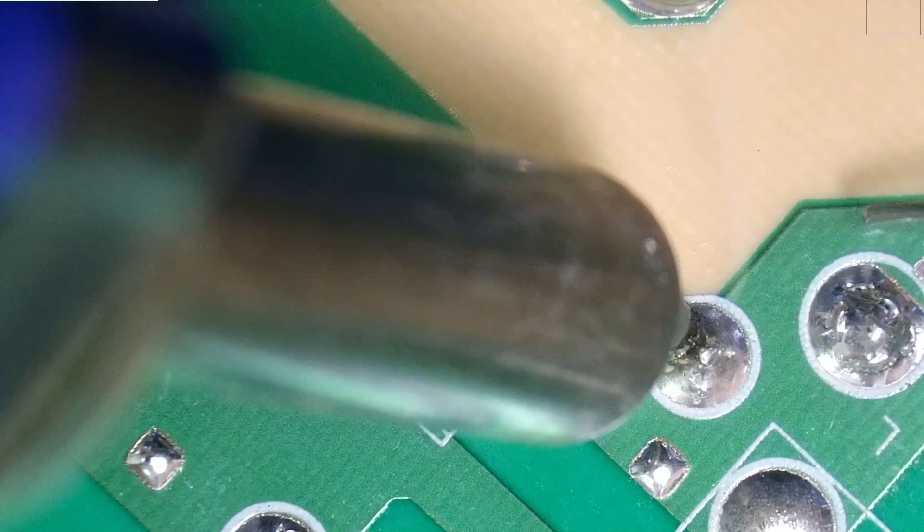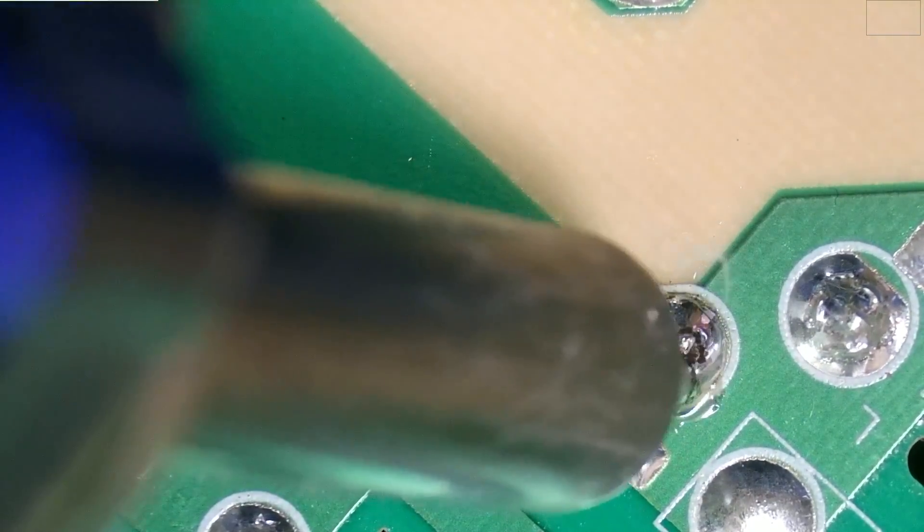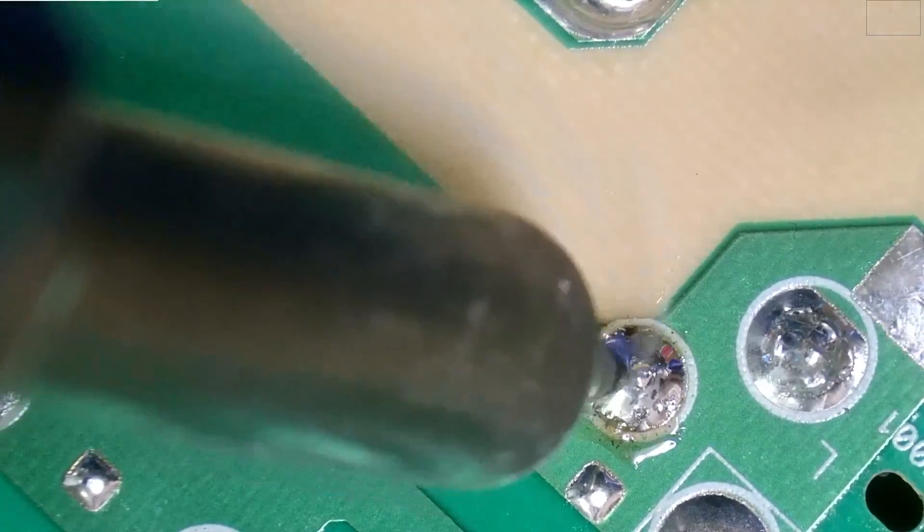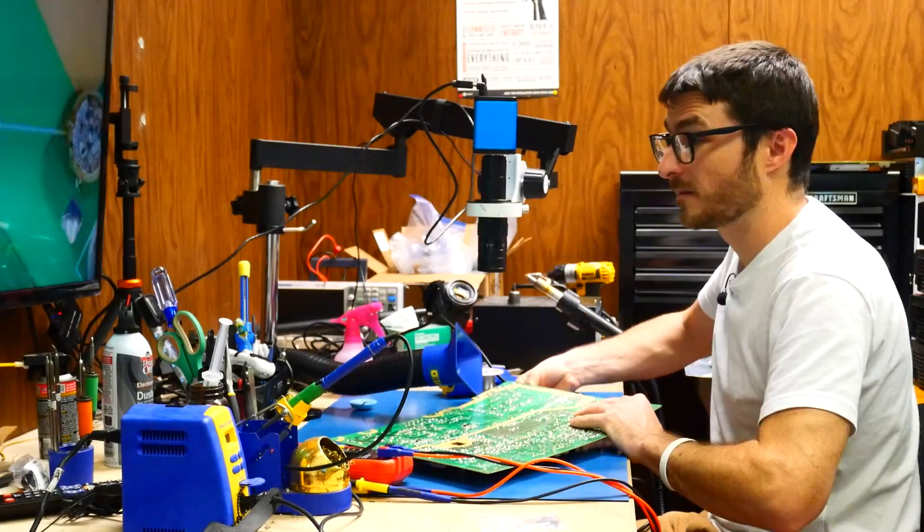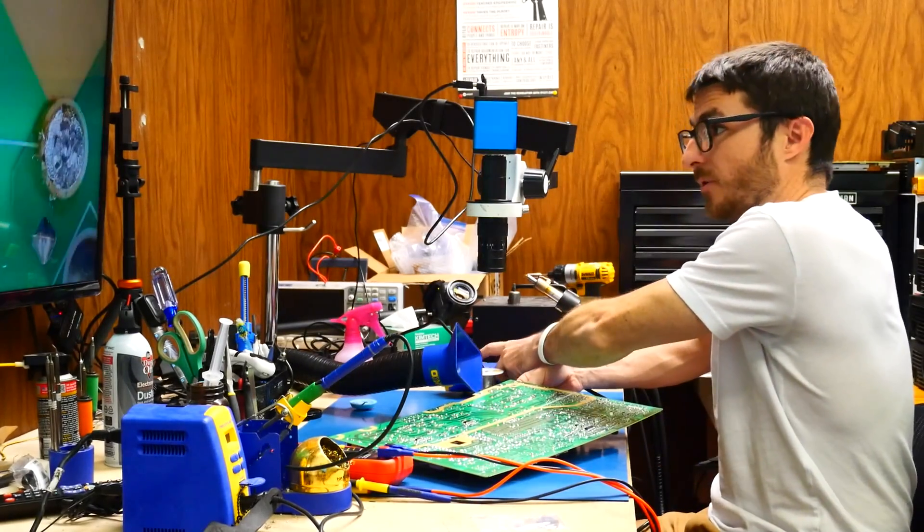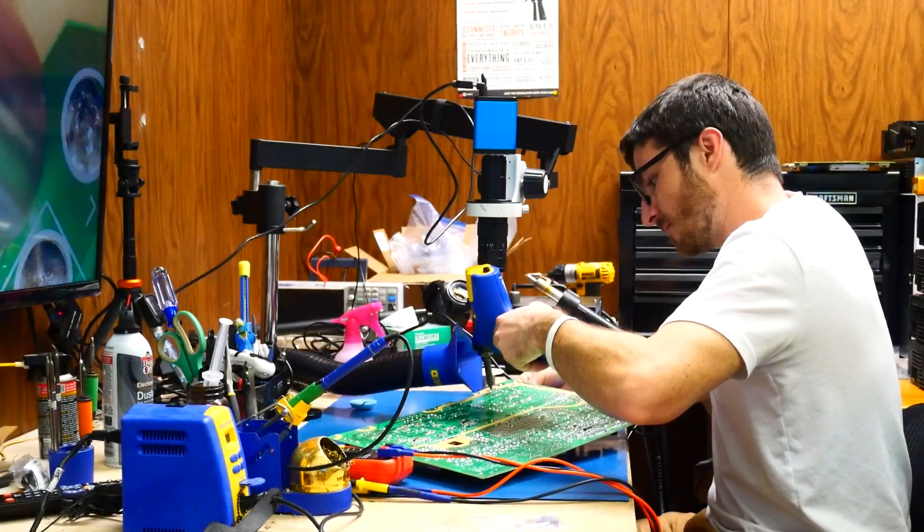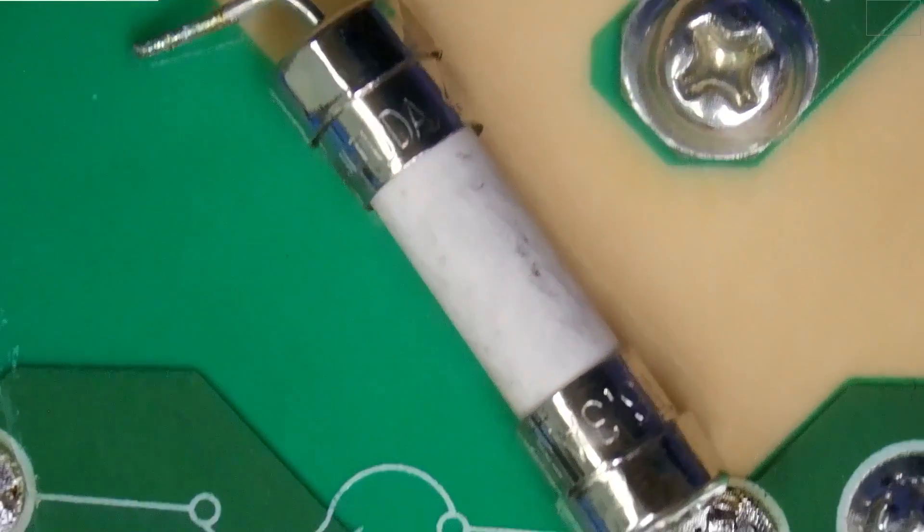I didn't get a very clean desolder job right there. Let me add a little bit more solder. Alright, that's better. Let me see if I can pull it through. There we go, it just fell through. So here we are, we have our fuse.